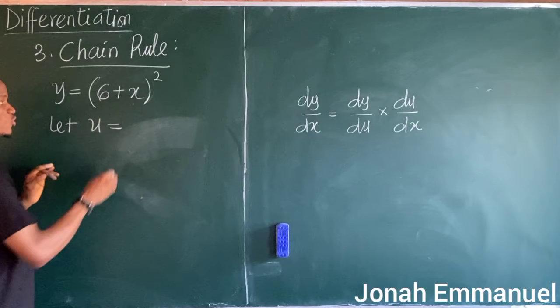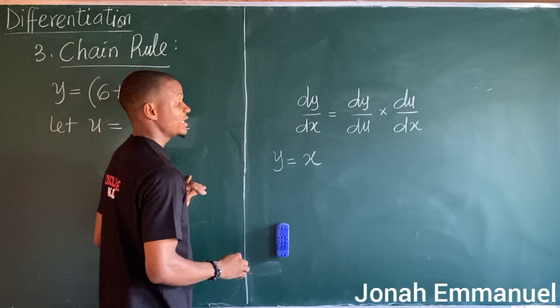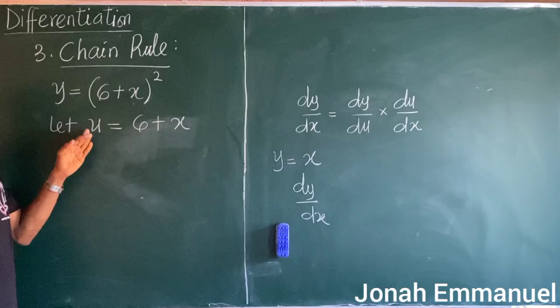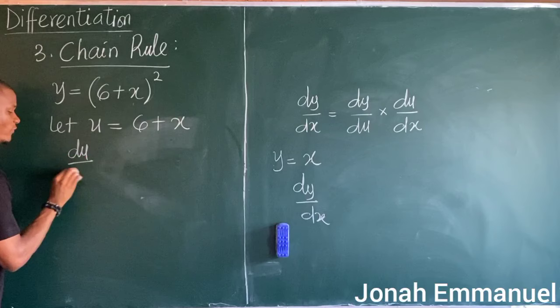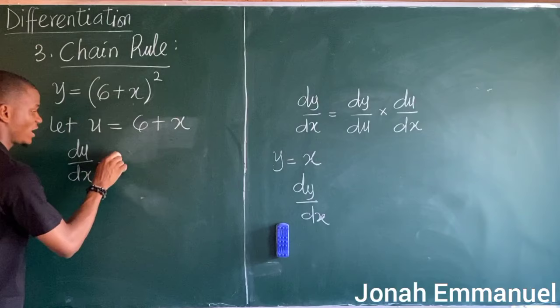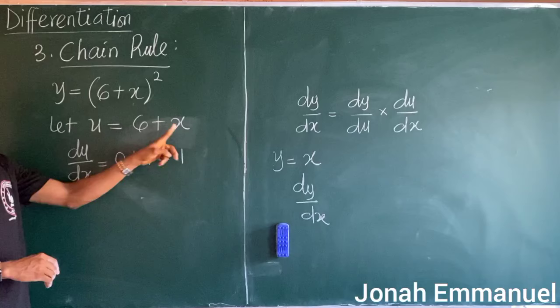I will let u represent everything in the brackets, so u is equal to 6 plus x. Since u is expressed in terms of x, differentiating gives du/dx. Using the general method: differentiating 6 gives zero, differentiating x gives 1, so du/dx equals 1.